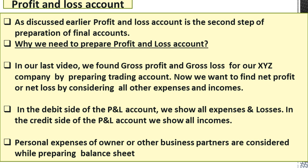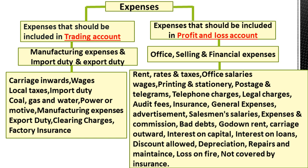On the credit side of the profit and loss account we show all incomes and gains. One important point to note: personal expenses of the owner or other business partners are considered only while preparing the balance sheet, not in the P&L account. Many of us get confused while separating expenses for trading versus profit and loss account. To avoid this confusion, I have prepared a chart. Under trading account we have all manufacturing expenses plus import and export duty, listed on the left side.